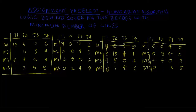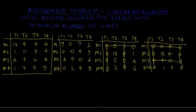Now let me cover all the zeros with minimum number of lines. Striking this row covers two zeros; striking this column covers two more zeros; striking another column covers one more zero; and striking this row covers one more. Since I used four lines to cover all the zeros, and four equals the size of the matrix (4×4), I stop here because I have generated enough zeros to do the assignment.